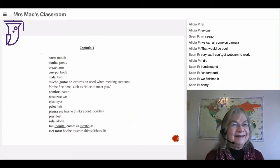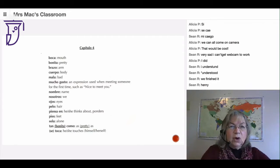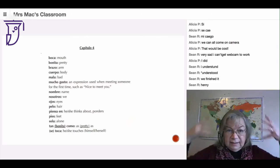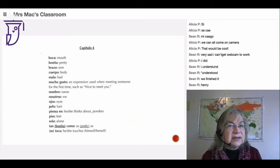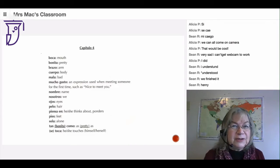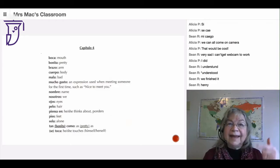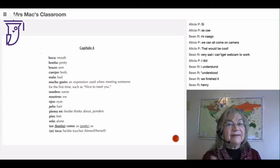Boca - mouth. Bonita - pretty. There are several ways to say pretty, that's one of them. Brazo - arm. Cuerpo - whole body. Mala - bad. Mucho gusto - when you meet somebody for the first time, that's a very polite thing to say. I want to introduce you, just say mucho gusto, pleasure to meet you.